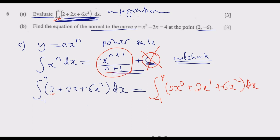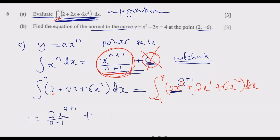Integrating with respect to x — this dx means the change in x. Applying the power law: for the first term, the power is 0, so we add 1 to get power 1. We divide by the new power, giving 2x to the power 1 over 0 plus 1. For the next term it will be 2x to the power 1 plus 1 over 1 plus 1. Then for the last term it will be 6x to the power 2 plus 1 over 2 plus 1.